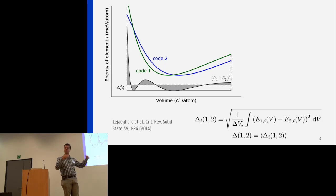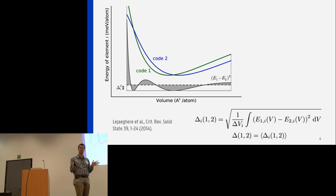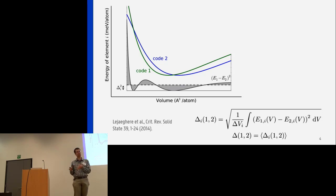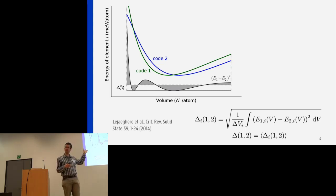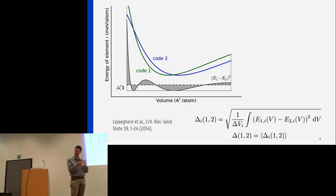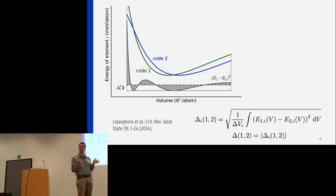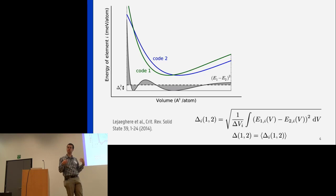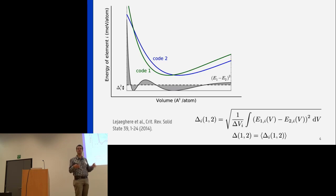What we did: we asked all of the collaborators involved in this project to have a look at a test set — a benchmark set of different materials. In this case, 71 elemental crystals. We provided all of the code developers or expert users with an input structure and asked them to predict an equation of state around this initial structure — don't let everything relax, just keep the structure fixed but only change the volume. Predict an energy versus volume curve. We call this per-element difference Delta I.